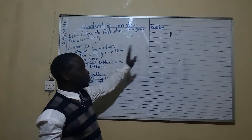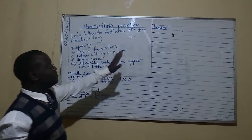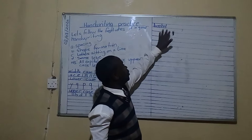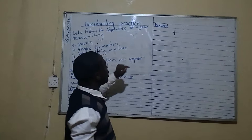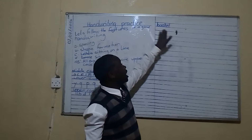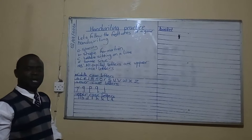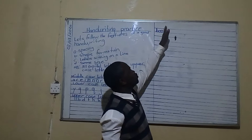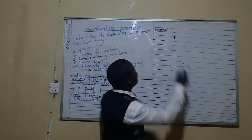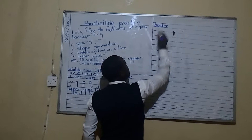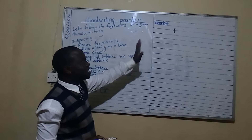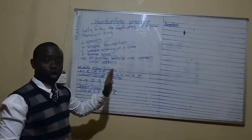Now looking at the word 'basket,' there are details we have to follow. First, make sure that we have equal spacing — my spacing is quite neat because all letters have the same kind of spacing. Second, all the letters are seated on the line; we don't have any letter sitting in space. Then look at the size — upper case letters all stretch up to the upper line, meaning they have the same height. The middle case letters are all of the same size as well.